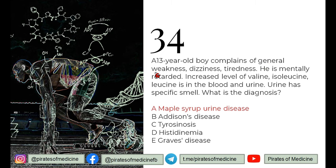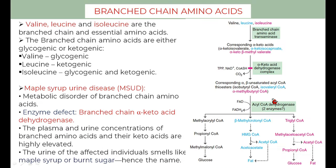Q34: a 13-year-old boy complains of general weakness, dizziness, and tiredness; he is mentally retarded. Increased levels of valine, isoleucine, and leucine are found in the blood and urine, and the urine has a specific smell. What is the diagnosis? Valine, leucine, and isoleucine are branched-chain amino acids. Valine and isoleucine are glycogenic; isoleucine is also ketogenic; and leucine is ketogenic. There is a disorder of these amino acids called maple syrup urine disease.